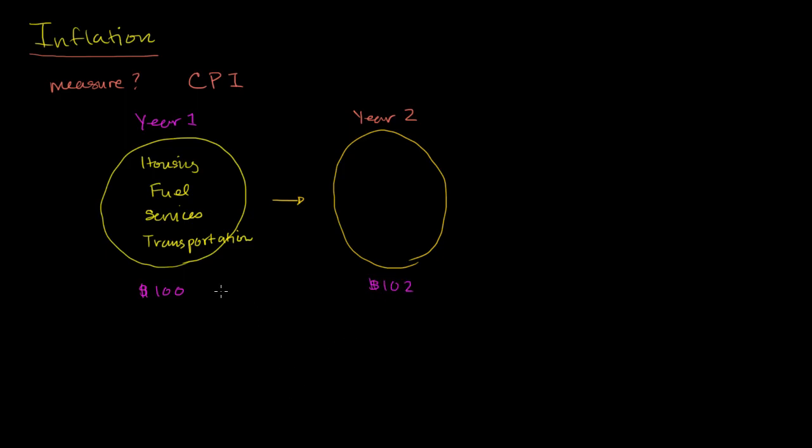Well, then they'll say that the general level of prices and services for this consumer went up by $2, or, the more important thing, by the percentage - by 2%. So based on this measure, based on this basket of goods, prices went up by 2%. Or you'll hear people on the news say that the inflation rate went up by 2%.